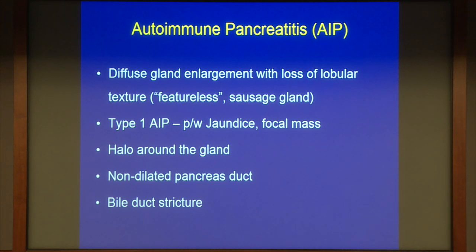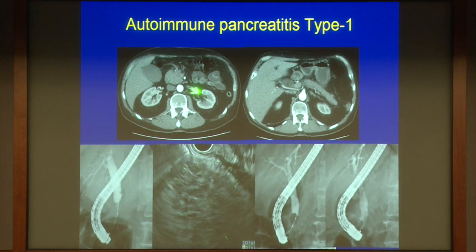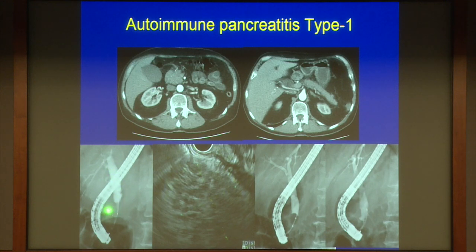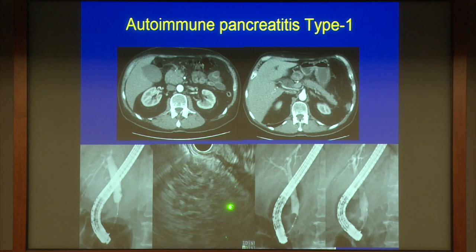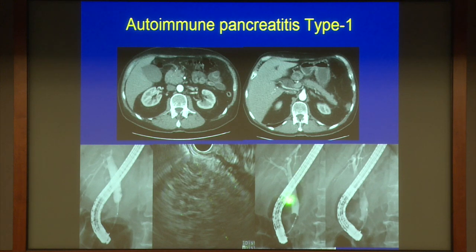The pancreatic duct does not get dilated in autoimmune pancreatitis. In a patient presenting with jaundice, CT showed a 3.5-centimeter mass in the head of the pancreas, but the pancreatic duct couldn't even be found — it wasn't dilated. At ERCP, there was a tight distal biliary stricture; stenting improved jaundice. On EUS, there was no focal mass, but the whole head was hypoechoic with white inflammatory strands, and the duct was tiny and non-dilated. Core biopsy showed lymphoplasmacytic infiltrate with IgG4 cells. Serum IgG4 was elevated; steroids were started and the biliary stricture almost completely resolved.